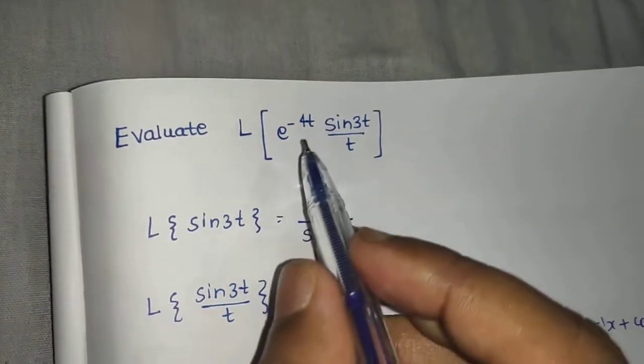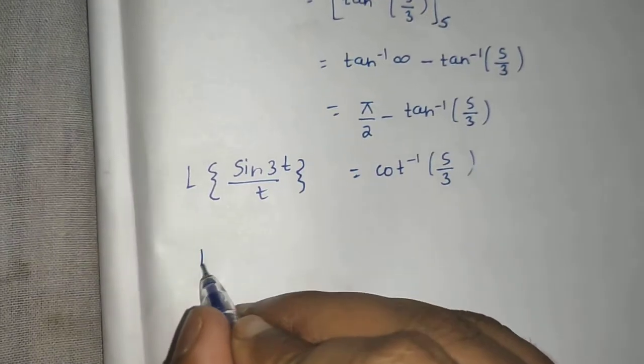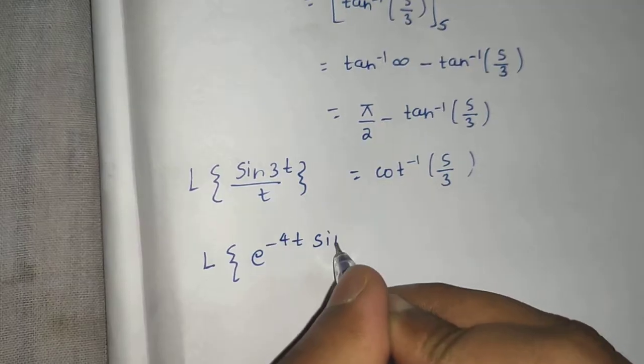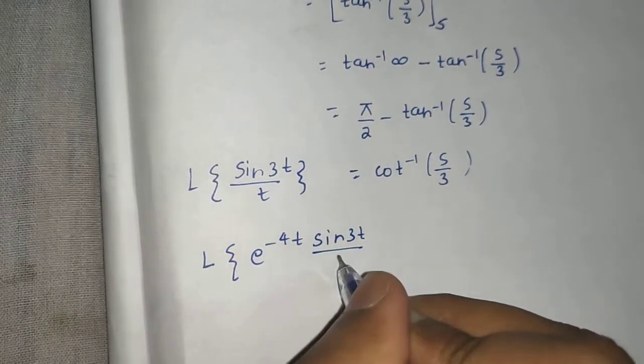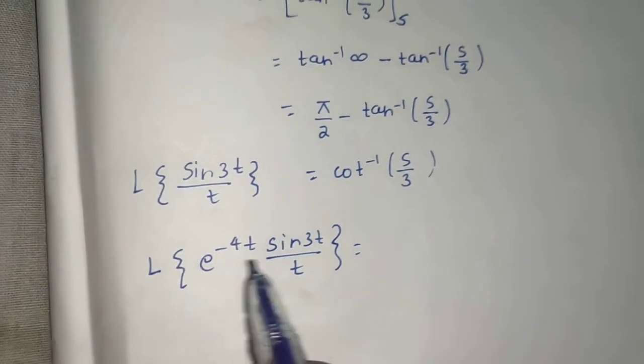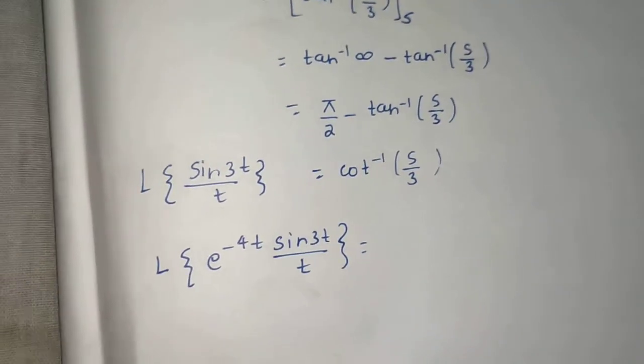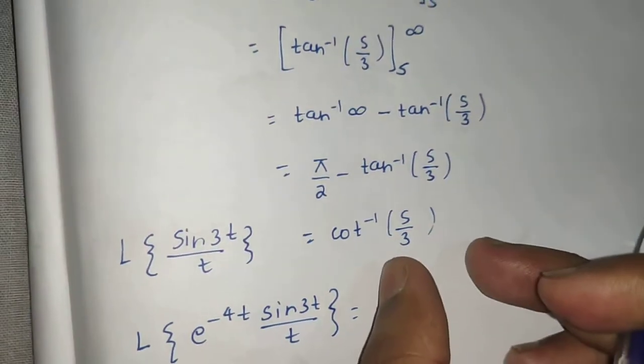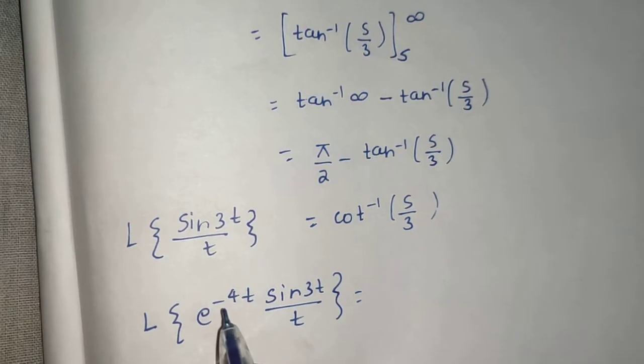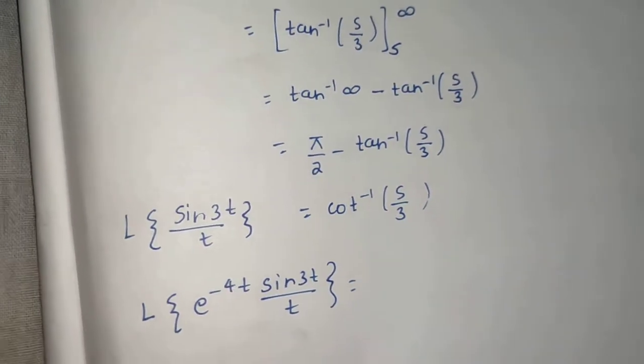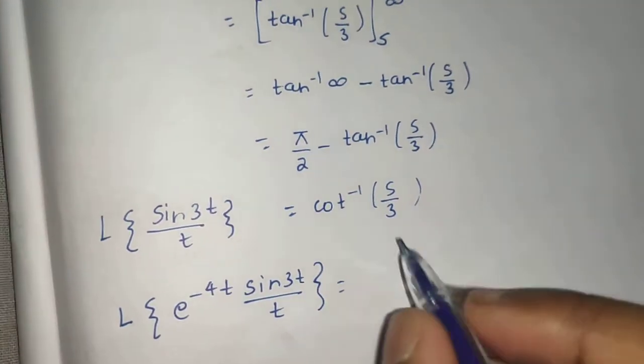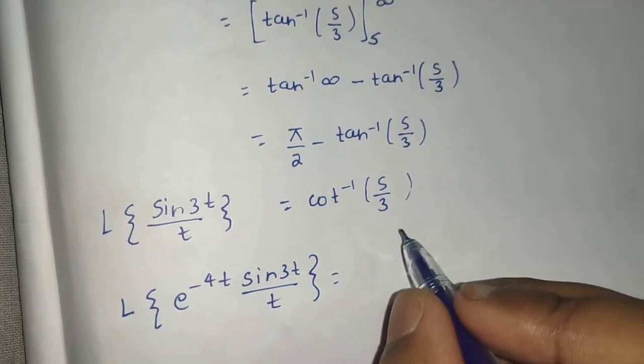Now finally, first shift. So Laplace of e power minus 4t sine 3t divided by t will give you. Now in first shift what we say is if you multiply by e power at, whatever we got in the previous step replace that s by s minus a. Here it is e power minus a. So we will replace s by s plus a. A here being 4. So replace s by s plus 4.